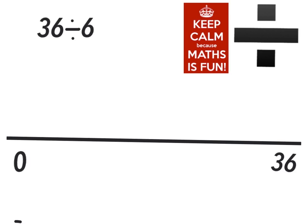Read the number sentence 36 divided by 6, then draw your number line. Our divisor is 6, so we're thinking about groups of 6.